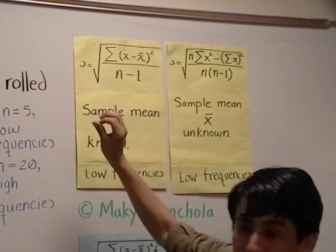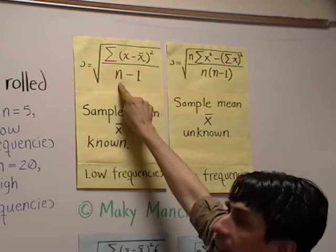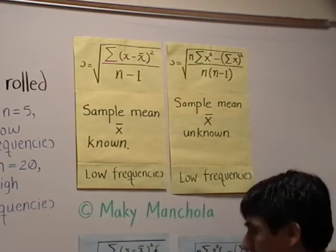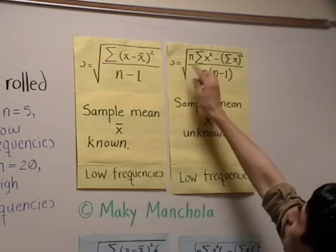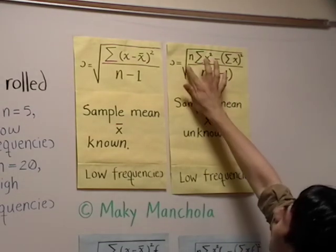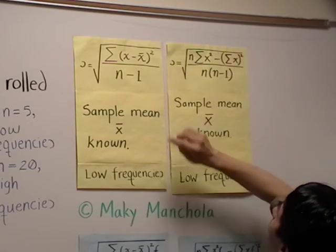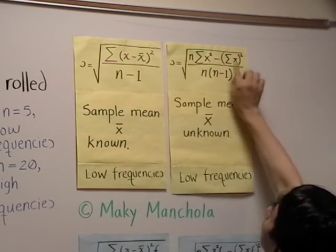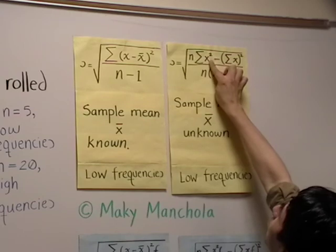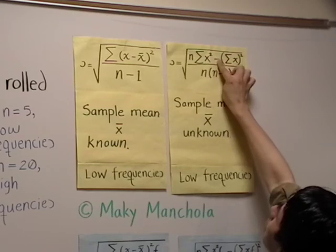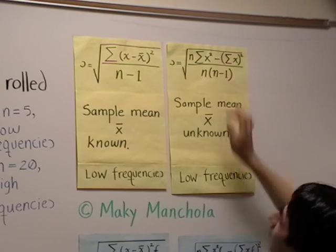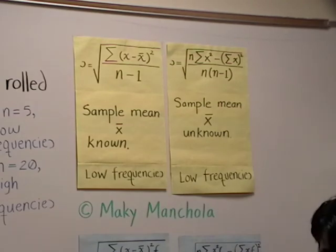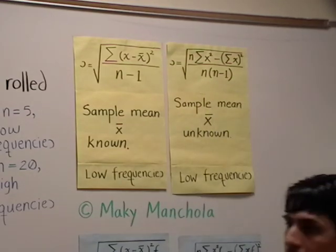Again, x-bar is the sample mean and n is the sample size. When we don't know x-bar, the formula for sample standard deviation is the square root of the numerator n times the sum of x squared minus the quantity (sum of x) squared, over the denominator n times n minus one.